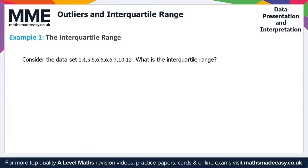In Example 1 on outliers and interquartile range, we've been given a dataset and all we need to do is find the interquartile range. To calculate the IQR, we need to find Q1, the lower quartile, and Q3, the upper quartile.